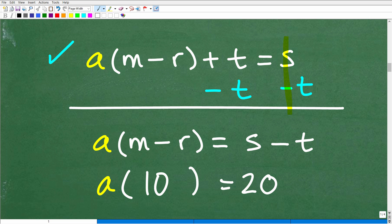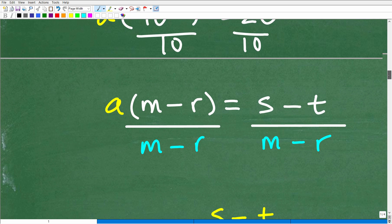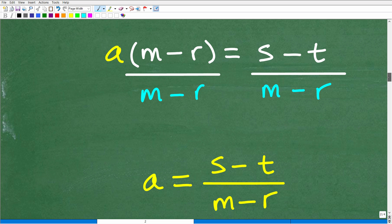In this case, that 10 is this part right here. So that's all we need to do. So here, to solve for A, we're going to divide both sides of the equation by this expression here, M minus R, both sides. So S minus T divided by M minus R is what A is equal to. Again, M minus R, anything divided by itself is going to be 1.